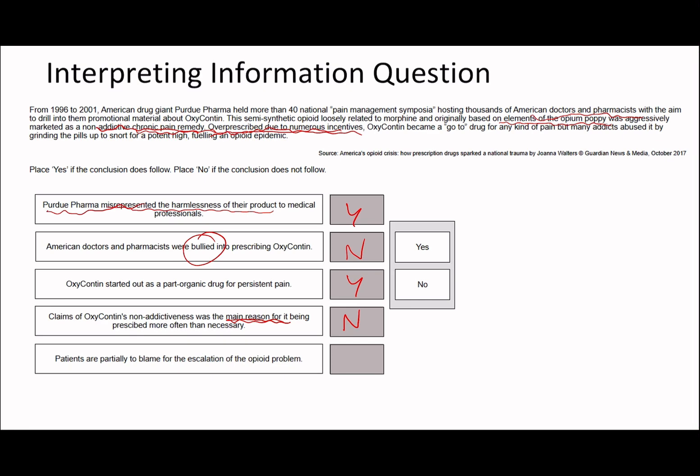Patients are partially to blame for the escalation of the opioid problem. It says many addicts abused it by grinding the pills up to snort for a potent high, fueling an opioid epidemic. So opioid epidemic, opioid problem, you see this direct link here. It says the addicts abused it and they ground the pills up for a potent high. So I would say that this is probably true, that patients are partially to blame for the escalation of this opioid problem. So yeah, I'd put yes, no, yes, no, yes. Great. On to the next question then.